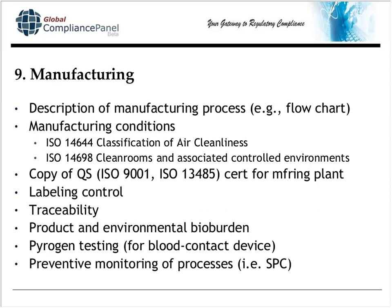Section 9, manufacturing, asks you to describe your manufacturing process. Most companies just make a flow chart. If either of the manufacturing conditions 14644 or 14698 apply to you, you've got to show compliance with those standards. If you manufacture at a different location from where you manage, you've got to have a copy of the quality system cert for that manufacturing plant. Explain your labeling control processes and traceability processes in this section. Any bioburden determination, pyrogen testing for direct blood contact devices, and any SPC monitoring you perform are referenced in this section as well.